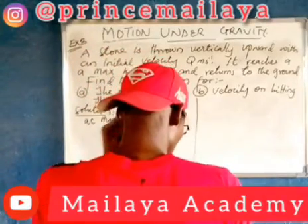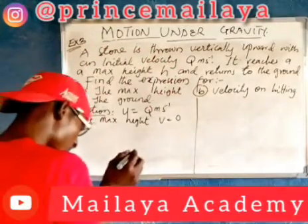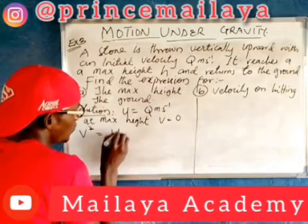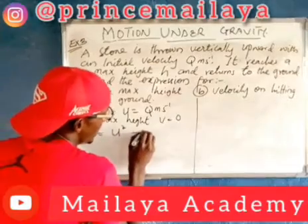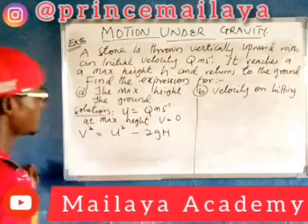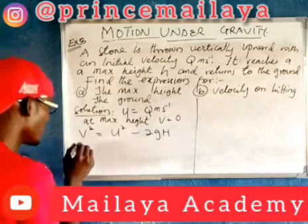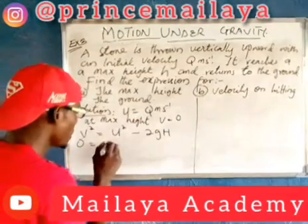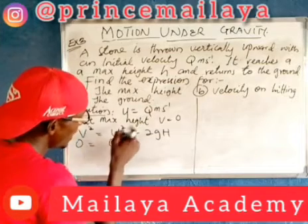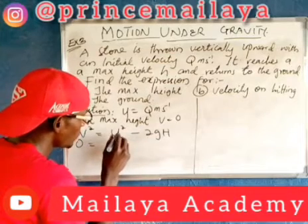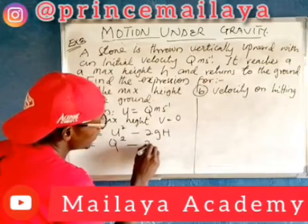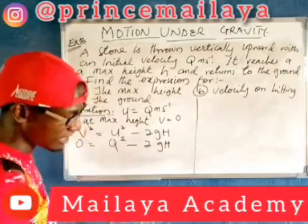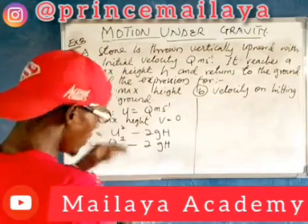So, using the relationship V² = U² - 2gh. Here, our final velocity is 0. Therefore, 0 = U² - 2gh, which gives us U² - 2gh = 0, or 2² - 2gh.